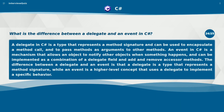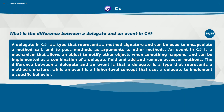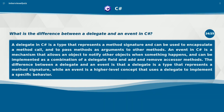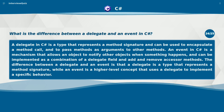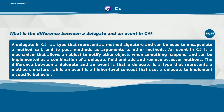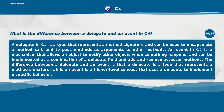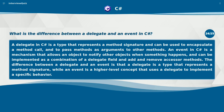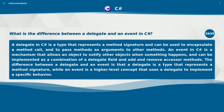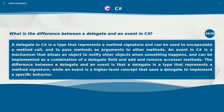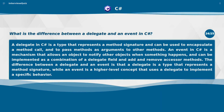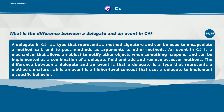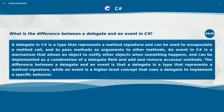What is the difference between a delegate and an event in C#? A delegate in C# is a type that represents a method signature and can be used to encapsulate a method call and to pass methods as arguments to other methods. An event in C# is a mechanism that allows an object to notify other objects when something happens and can be implemented as a combination of a delegate field and add and remove accessor methods. The difference is that a delegate is a type representing a method signature, while an event is a higher-level concept that uses a delegate to implement a specific behavior.